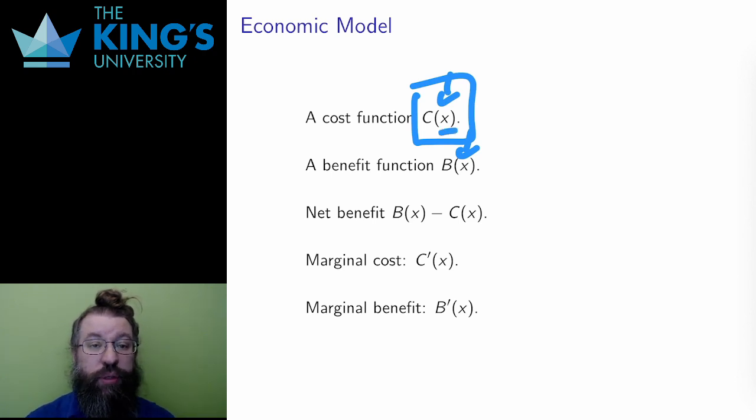And there also is a benefit function, B of X. This is the benefit of producing X units. These could be simple monetary values, cost to produce and price to sell. However, the model is very general, and the cost and benefit could include mathematical models of other types of goods as well.